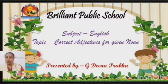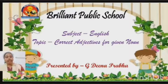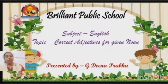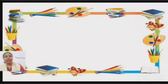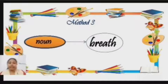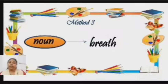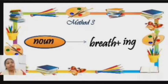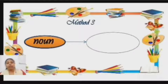That means we are going to see four new suffixes. When we add these suffixes to few of the nouns, we can convert them into adjectives. So let's begin our class with the third method. Breathe — breathe is a noun. We are going to add '-ing' and the word becomes 'breathing'.